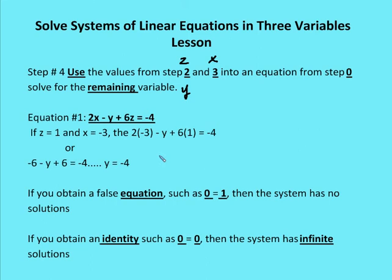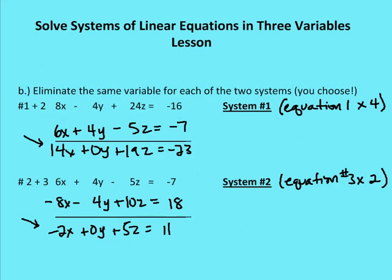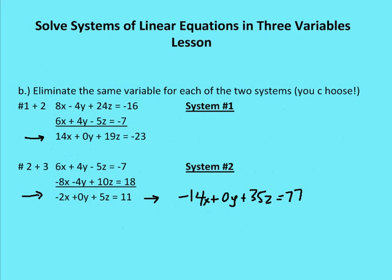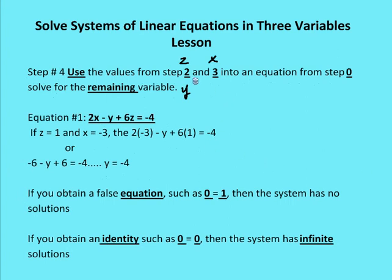Now I have my solution, which is an ordered triple x, y, z. We found that x equals negative three, y equals negative four, and z equals one. So the ordered triple is negative three, negative four, one.